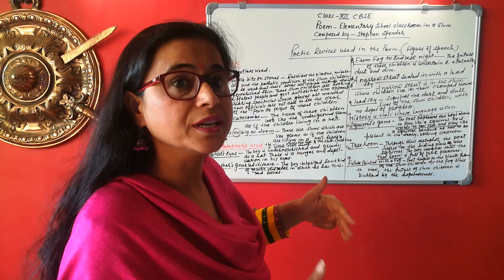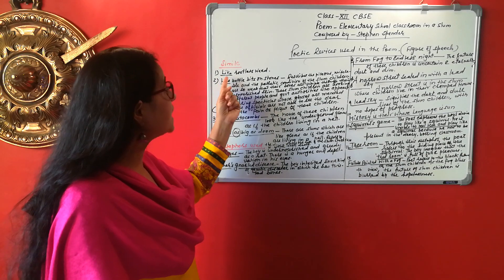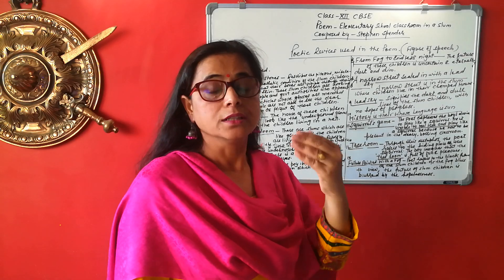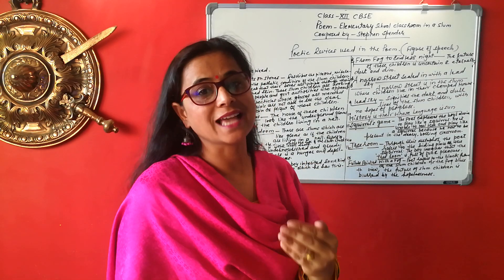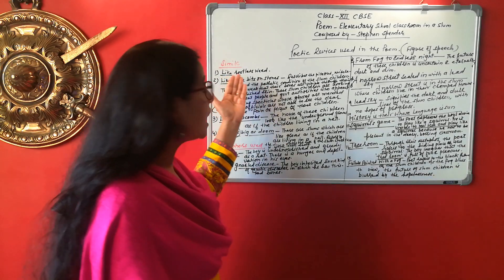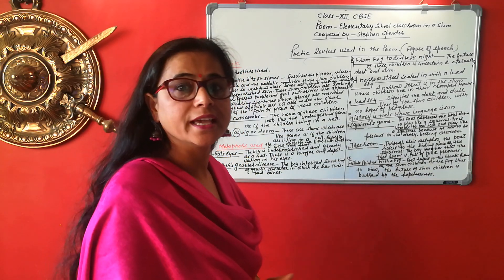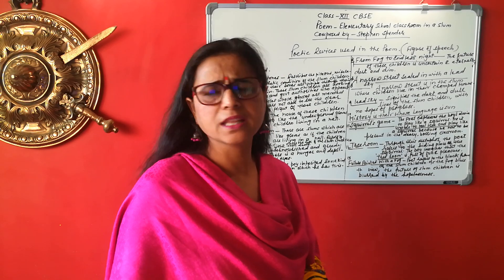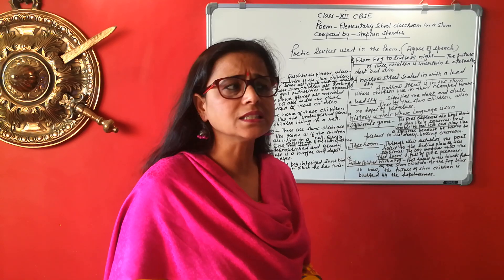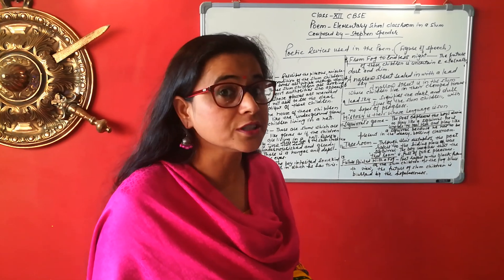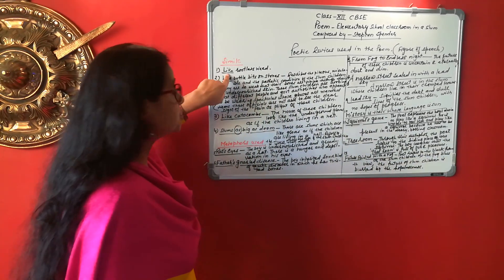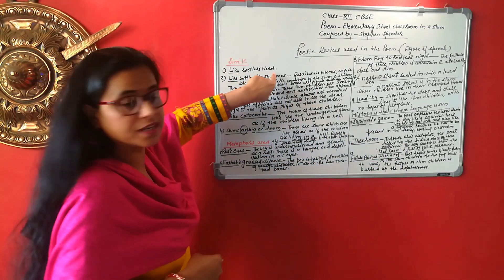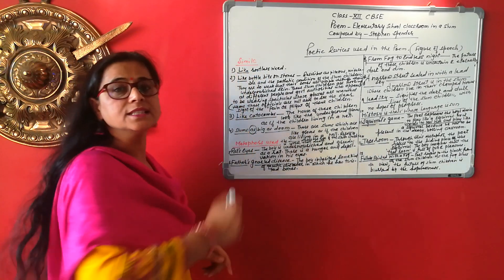The first example of simile is 'like rootless weed.' Through this, poet Stephen Spender compares the children of the elementary school, which lies in a slum area, to rootless weed. Rootless weed means unwanted grass. These slum children are considered useless because people think they are not important for society. The word 'like' is used here, so this is a simile.